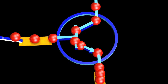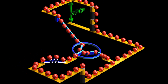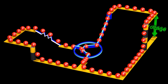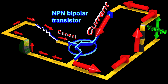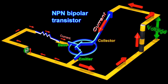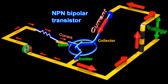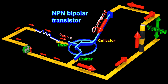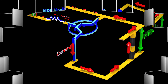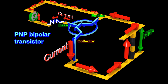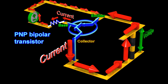Another popular semiconductor device is a NPN bipolar transistor. In a NPN bipolar transistor, a small positive current flowing into the middle terminal controls a much larger current flowing through the two other terminals. A PNP bipolar transistor is similar to this, except that it is the positive current flowing out of the middle terminal that controls the current flowing through the other two terminals.